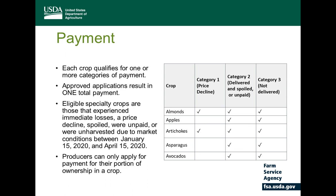An important note on payments: crops that are in inventory, available to be sold on April 16th, and that have a future value are not eligible. For example, apples, potatoes, and onions can be stored in cold facilities where they maintain their value and can be marketed at a later time. Those crops will not be eligible under categories two and three.